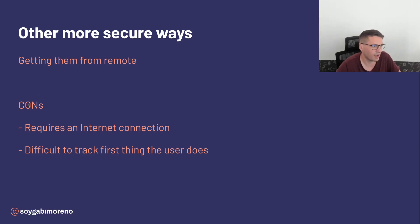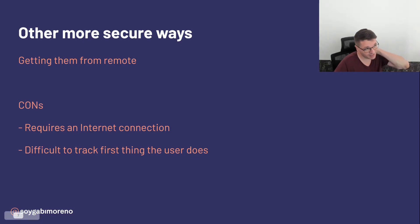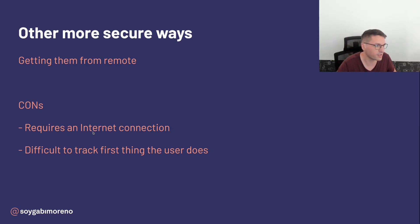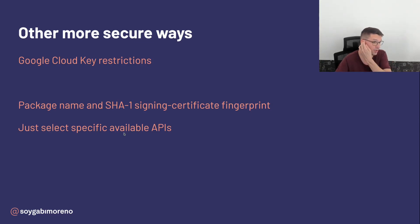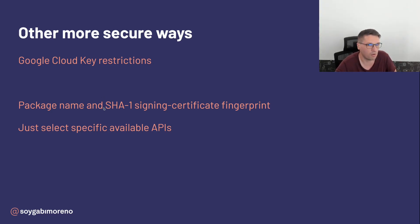But this has some downsides. The first one is that it requires an internet connection. Although this should not be a big deal, there are other concerns — for example, it is very difficult or even impossible to track the first actions of the user on a fresh install if we don't have the API key stored locally, which in fact the tracker library requires. On the other hand, there are cases where storing the API keys — for example the Google Cloud key ones — is not a problem because we can restrict them and they are pretty secure.